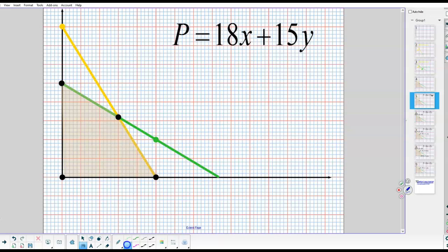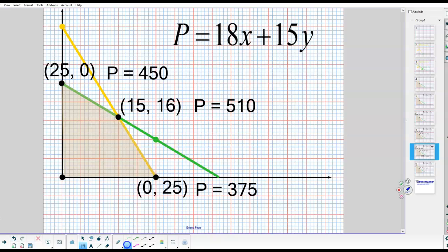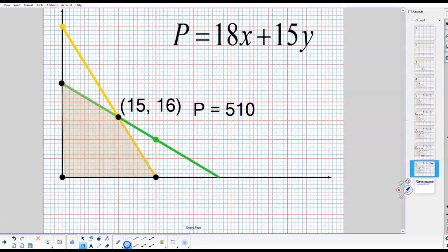Remember this is our profit equation, 18X plus 15Y. So what we're going to do is we're just going to plug in each ordered pair. The first ordered pair for the vertex gives me a profit of 450. My next ordered pair gives me a profit of 510. The ordered pair along the X-axis gives me a profit of 375. So it looks like the ordered pair of 15, 16 is going to maximize my profit.